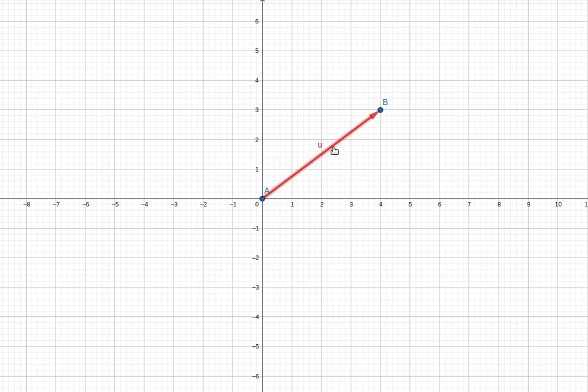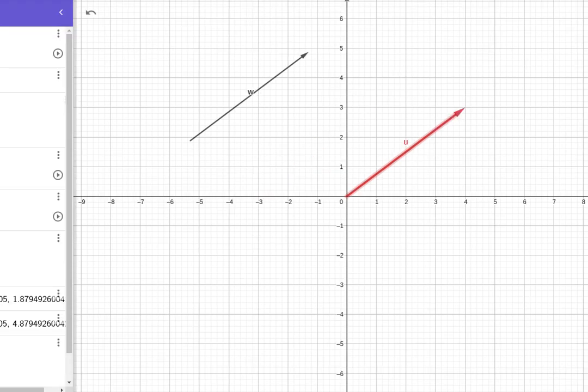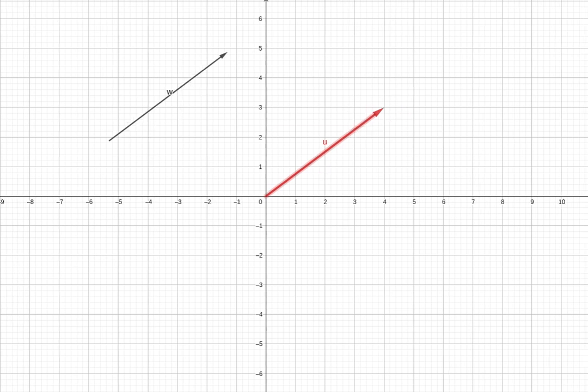So this vector W is the same vector. The important thing about a vector is that it has a length and magnitude. This vector W has the same length and magnitude.